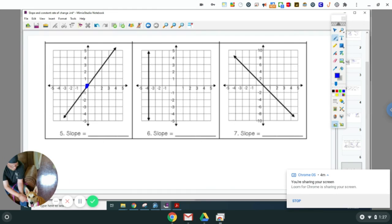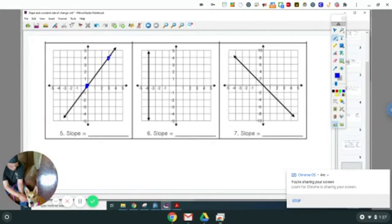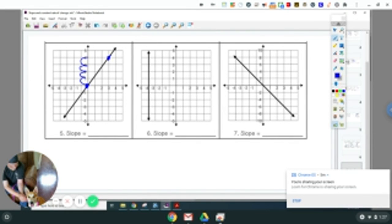All right. So this would be a dot. And then this would be a dot. So I'm going to go one, two, three, four. So I rose four. And I'm going to go one, two, three. So I ran three. So it would be four-thirds.